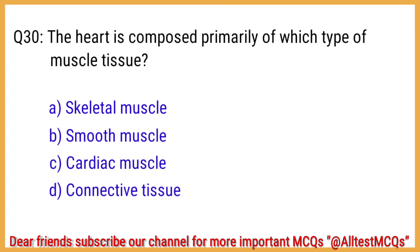Q31. The heart is composed primarily of which type of muscle tissue? The correct answer is option C: Cardiac muscle.